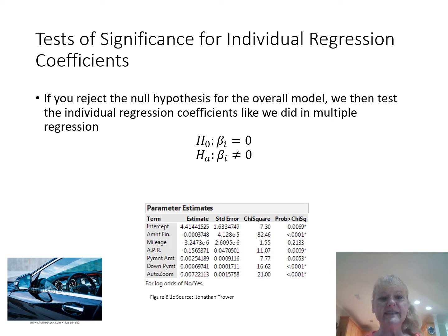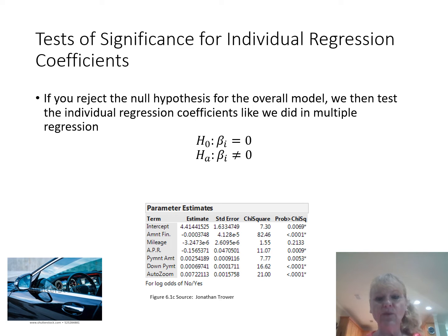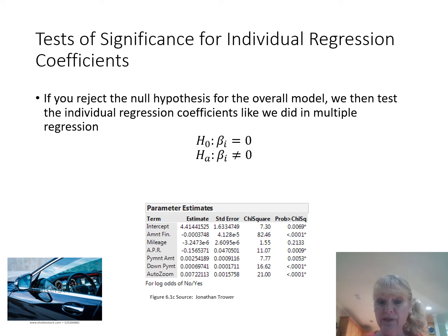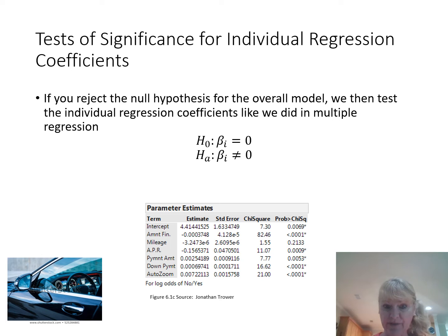Then we'll go in and test the individual coefficients. You ignore the intercept. The amount financed has a p-value less than .0001, therefore it's a good predictor. Mileage is not. APR, payment amount, down payment, and auto-zoom appear to be good predictors.